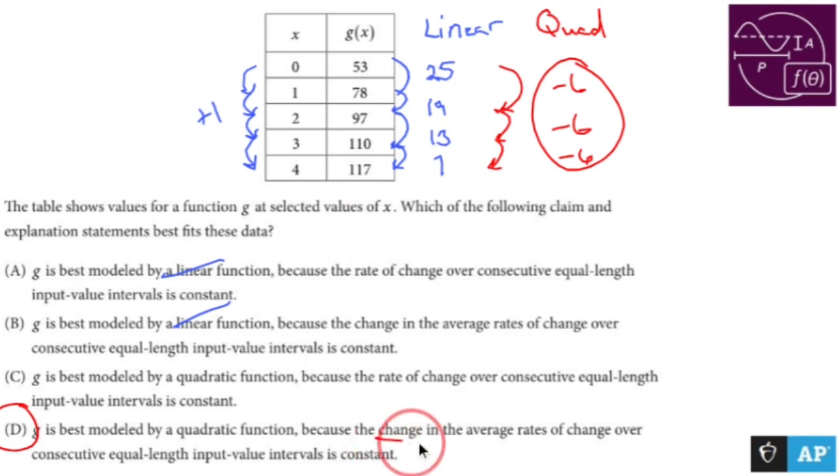D is saying that the change in the average rate of change, which means this is my average rate of change, this change is what's changing. My gosh, so much change, I should be going to an arcade. The answer is D.